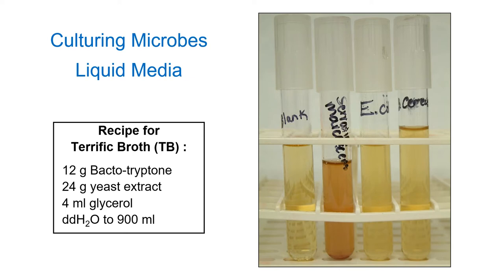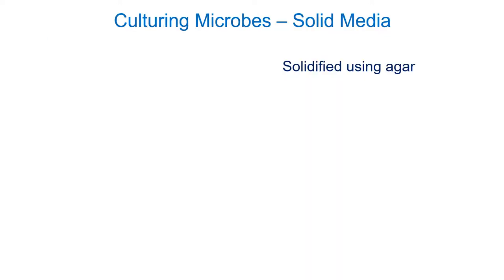A very common liquid media used in labs to grow a variety of bacterial species is terrific broth (TB) — this is a complex media allowing the growth of many different microbes. We also use tryptic soy broth. It often makes sense to grow bacteria on a solid medium instead of liquid — you can take your favorite liquid media recipe and add agar to solidify it, kind of like making jello.